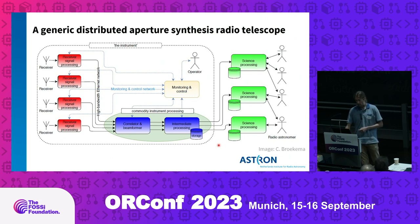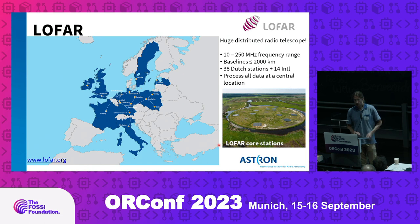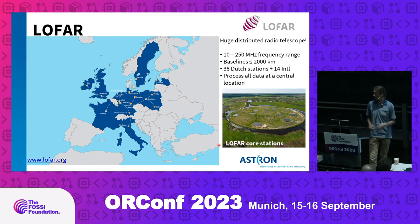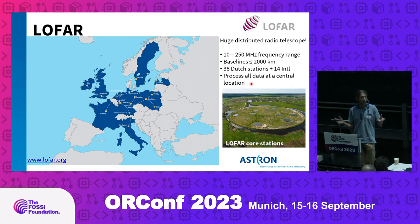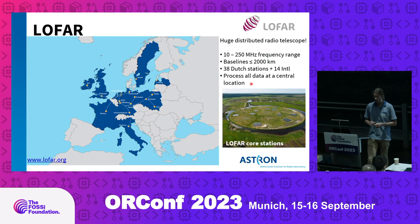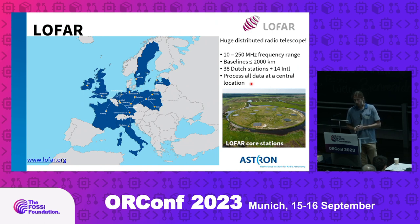We also operate our own radio telescopes. I want to take you along in one of our systems, which is called LOFAR — the Low Frequency Array. This is a huge distributed radio telescope. Most of the telescope is in the Netherlands but it's spread out over Europe to get both a good collecting area and long baselines, so the diameter of our system is over 2000 kilometers. We have 38 stations in the Netherlands and 14 spread out over Europe and we are still expanding. We have to move all this data to a central location in order to process it.